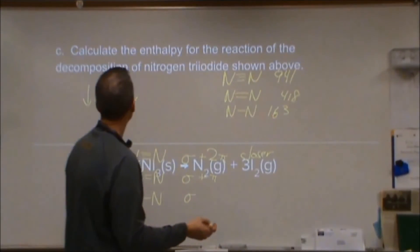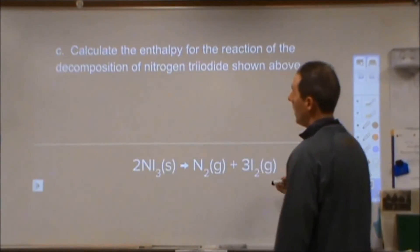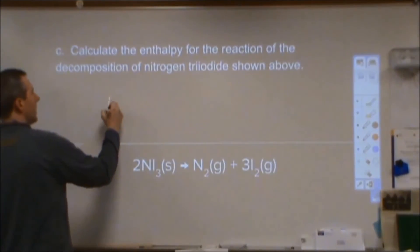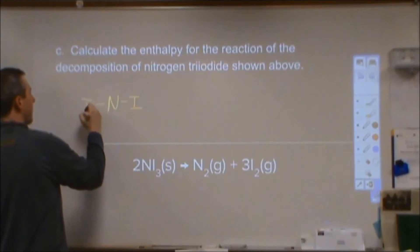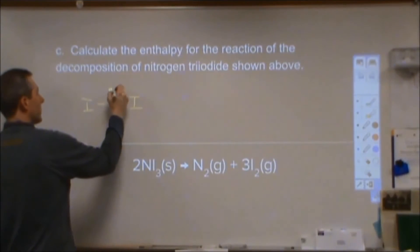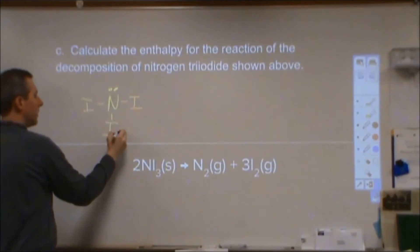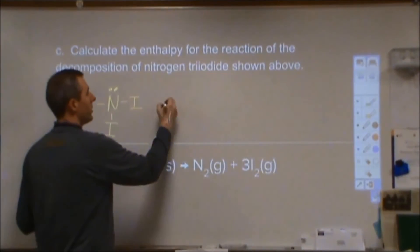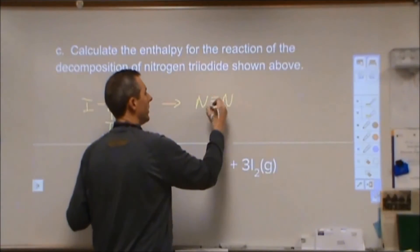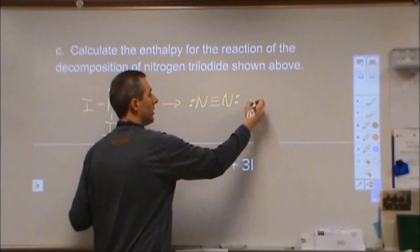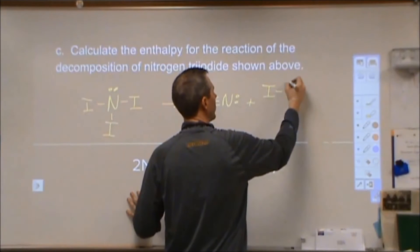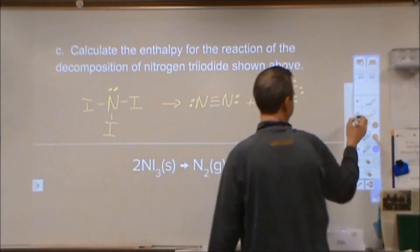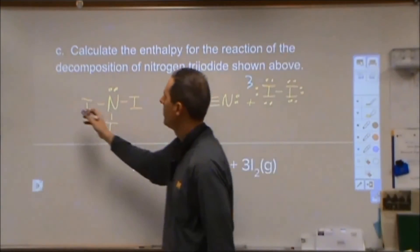Moving on to Part C, we calculate the enthalpy for the decomposition of nitrogen triiodide (NI₃). I'll put this in Lewis structure form. We have two molecules of NI₃ decomposing into N₂ with a triple bond, plus three I₂ molecules with a single bond. We can go ahead and note there are two NI₃ molecules and three I₂ molecules produced.